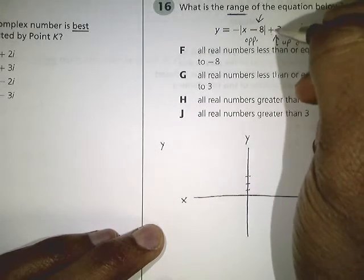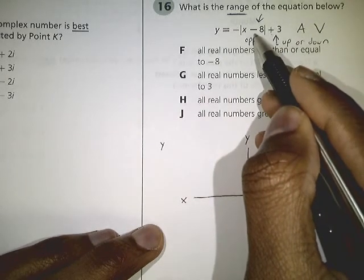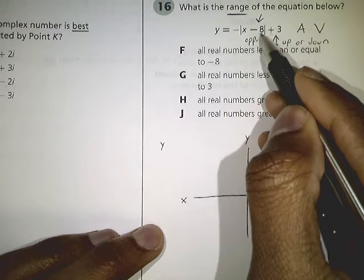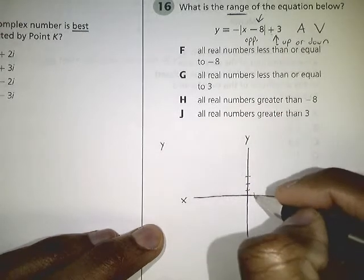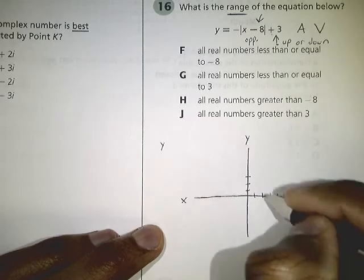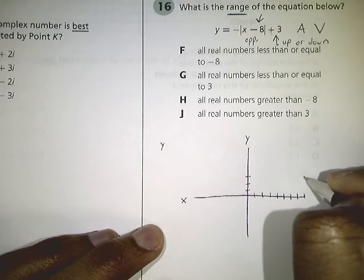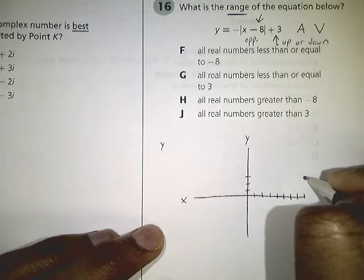And then you have to do the opposite of what this says. Well, since this says negative 8, you have to go to the right 8 spaces because again you just have to do the opposite. So our vertex is going to end up being somewhere about here.